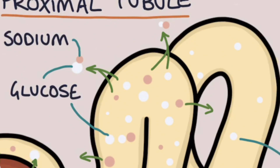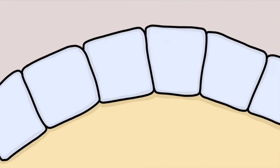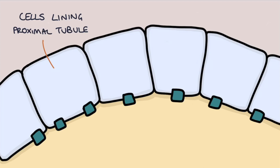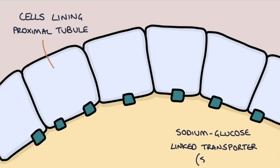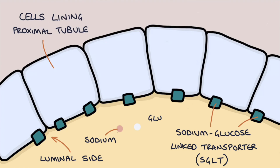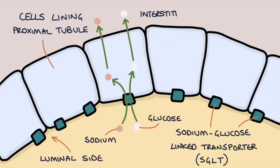Looking more closely at the proximal tubule: the cells that line it have a molecule called the sodium-glucose linked transporter, shortened to SGLT, on their luminal side. This transports sodium and glucose together across the cell membrane and out of the filtrate. This sodium and glucose then passively diffuses out of the other side of the cell into the interstitial fluid, where it's reabsorbed into the blood.